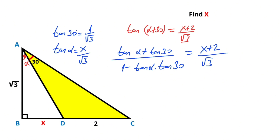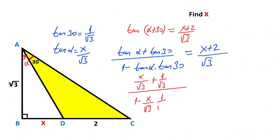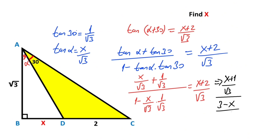Therefore, plugging in these values: (x/root3 + 1/root3) over (1 − (x/root3)·(1/root3)) equals (x + 2)/root 3. Simplifying the denominator: root3 over (root3 − x/3) equals (x + 2)/root 3.